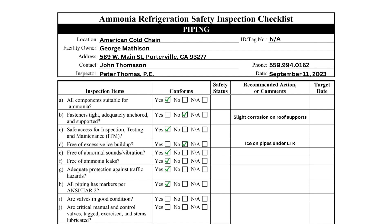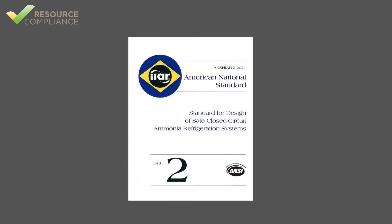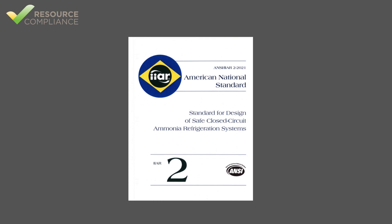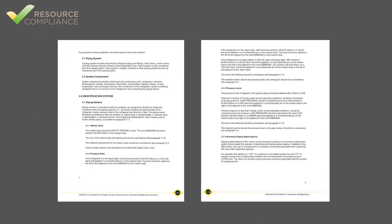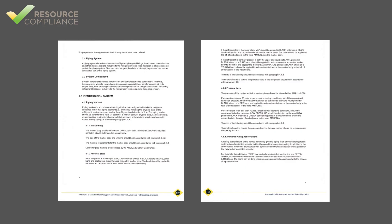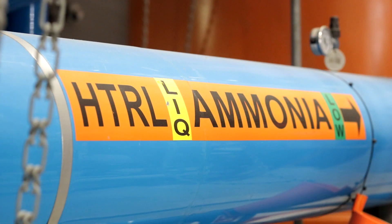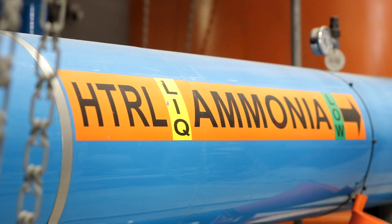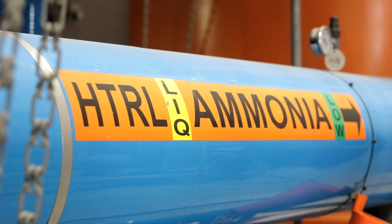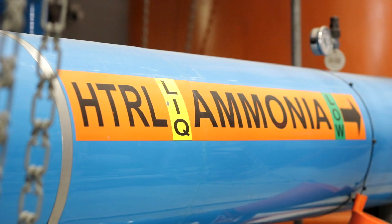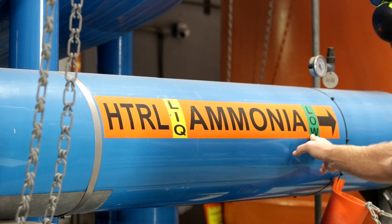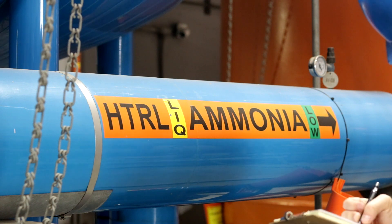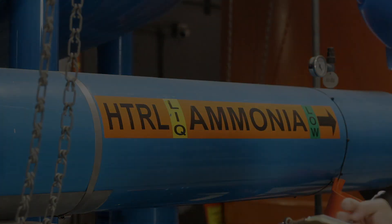Item H inquires if the pipes are marked as required by IIAR Standard 2. Standard 2 requires piping mains, headers, and branches to be labeled with the following: the word ammonia printed in black letters; the physical state abbreviation LIQ or VAP; the relative pressure, high or low; an arrow depicting the direction of flow in the pipe; and a service abbreviation indicating the purpose of the pipe.